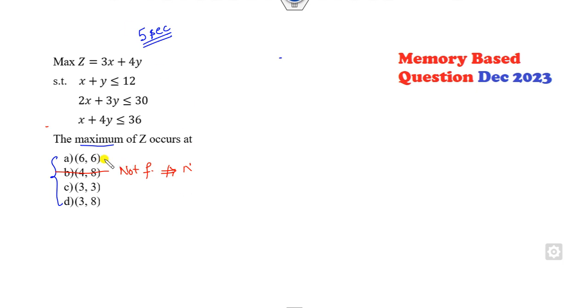Look at 3 comma 3: 6, satisfied. 15, satisfied. 3 comma 8: 11, satisfied. 6 plus 24, satisfied. 3 plus 32, satisfied. So now from this, I can get a, b, c, d are one of the right answers. Now find the value of Z. What is the value of Z at 6 comma 6? It's 42. Find the value of Z at 3 comma 3: 21. The value of Z here is 9 plus 32 equals 41. So you can see what is the maximum value? A is my right answer of the problem. That's very simple.